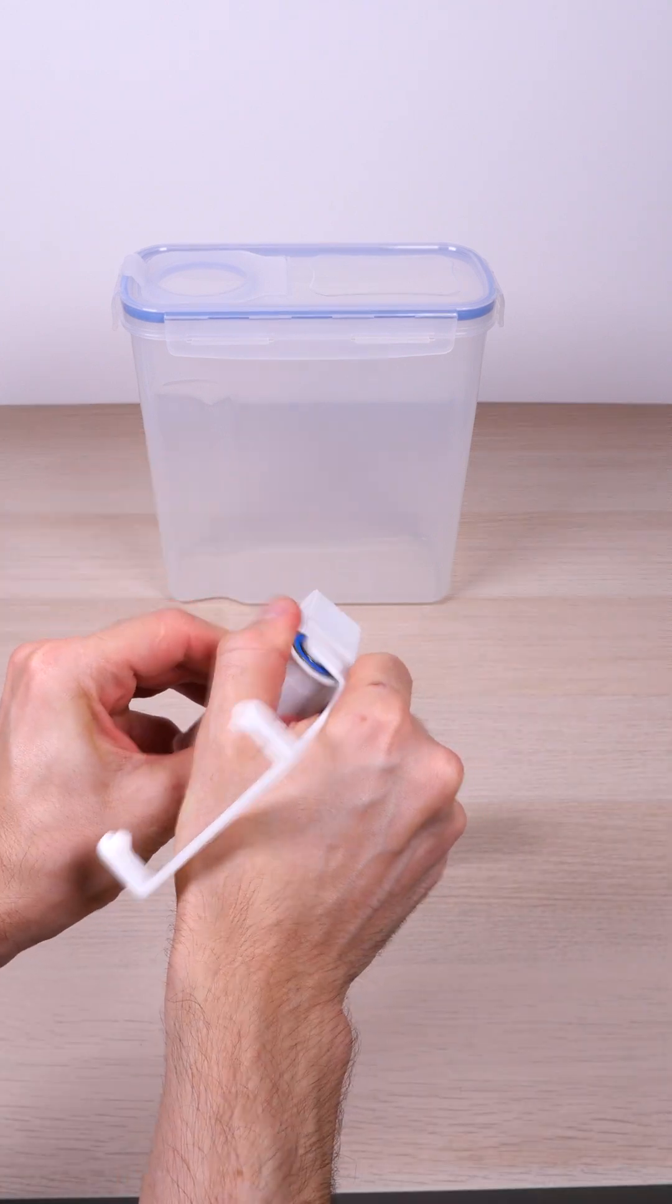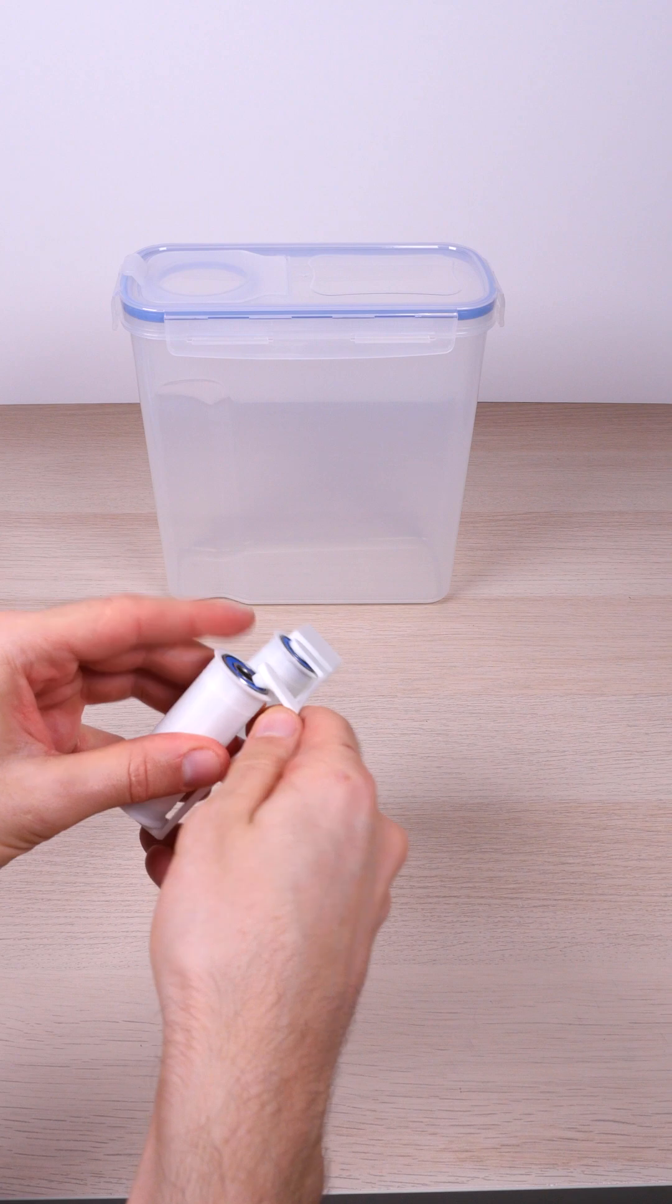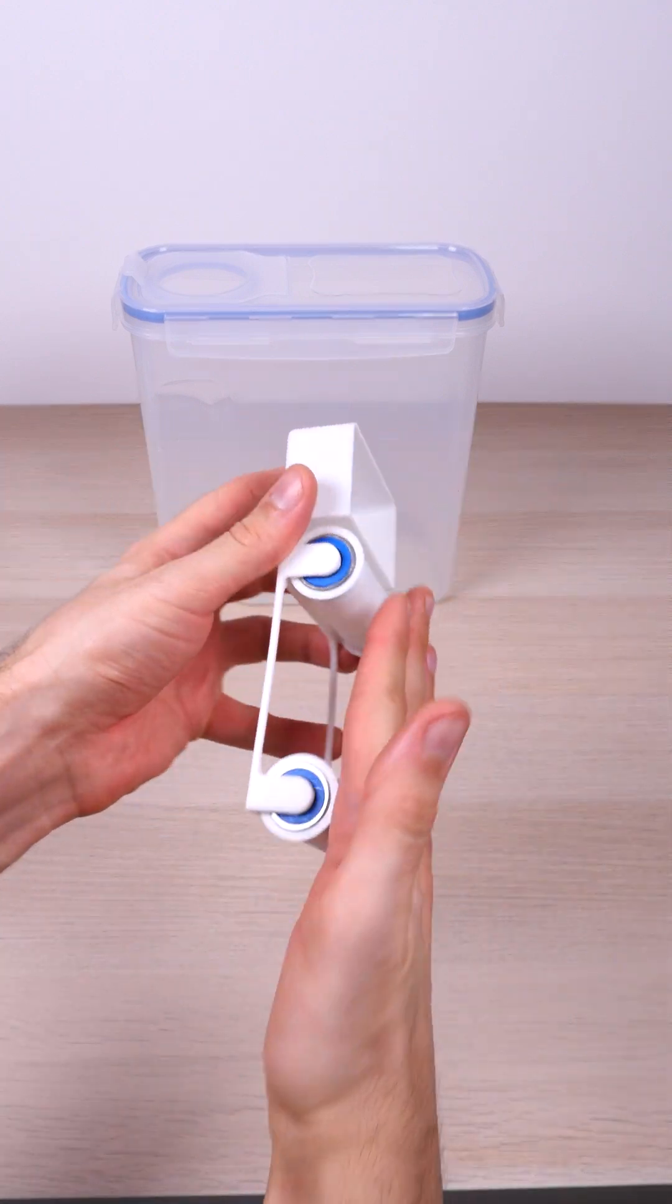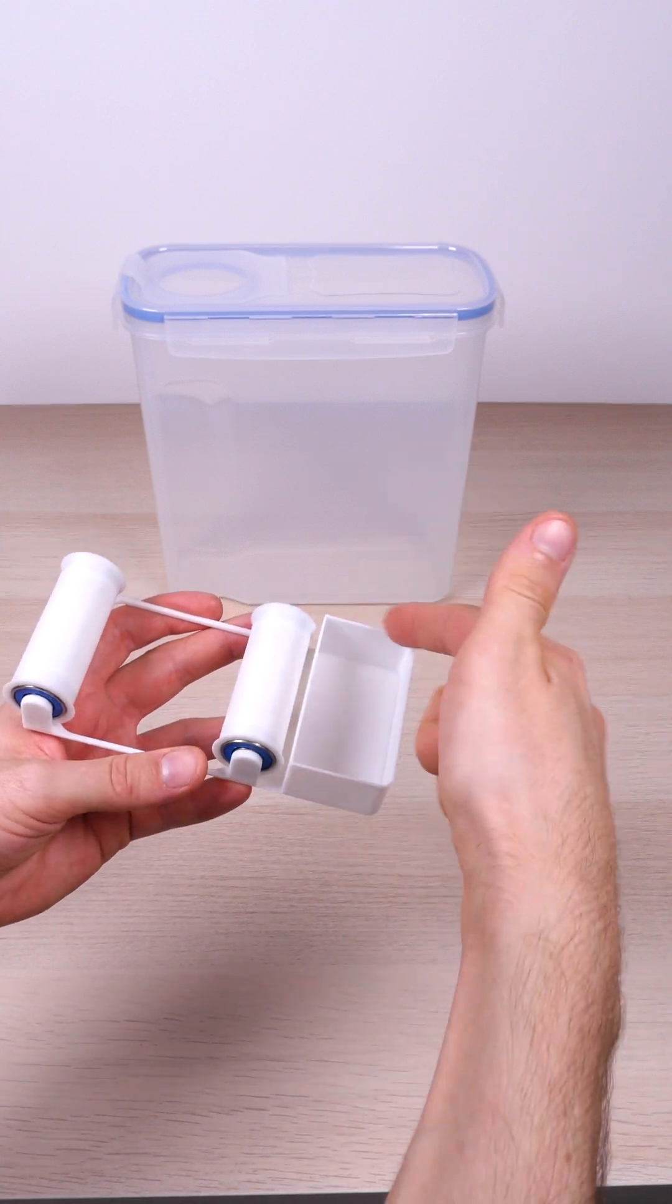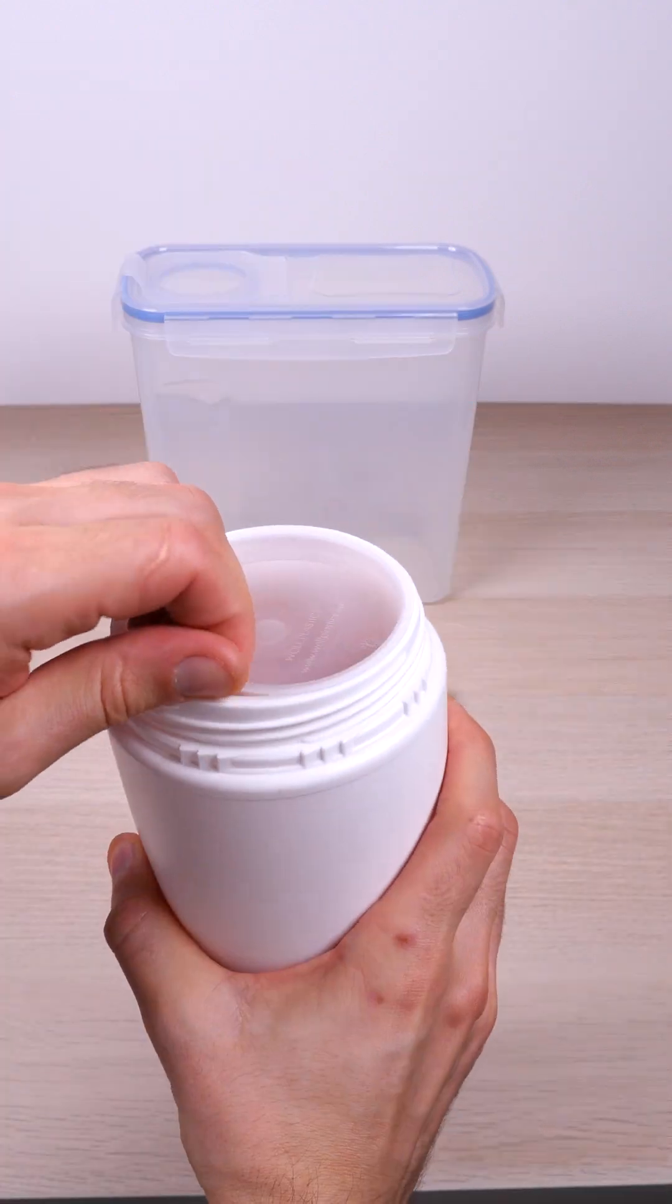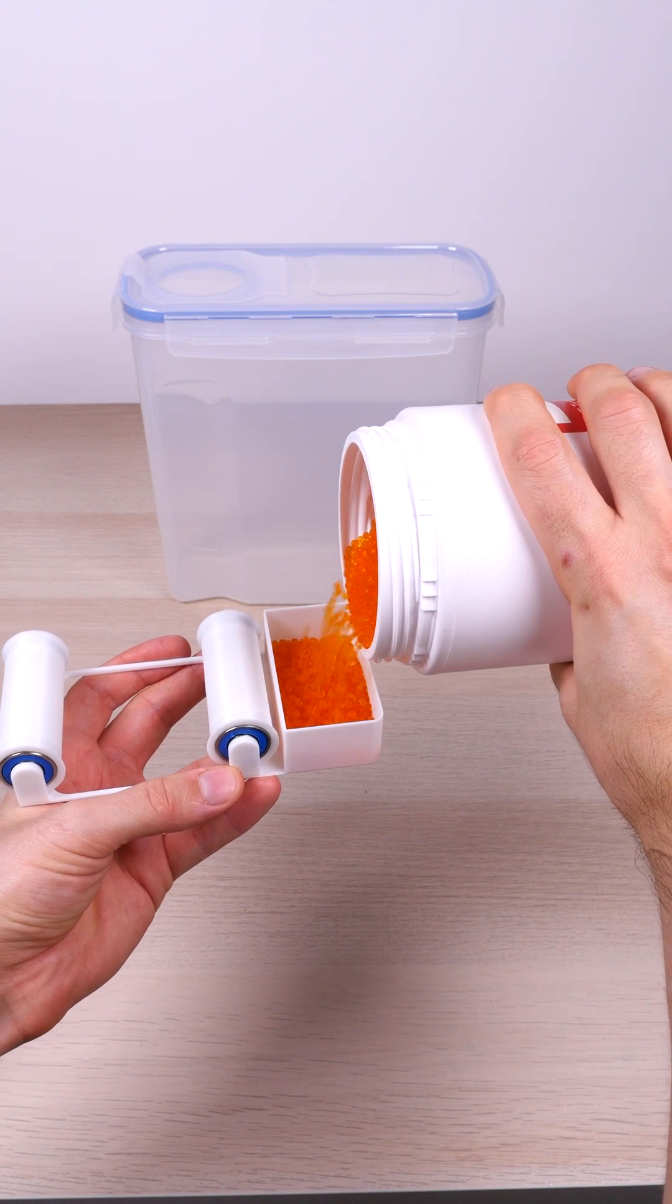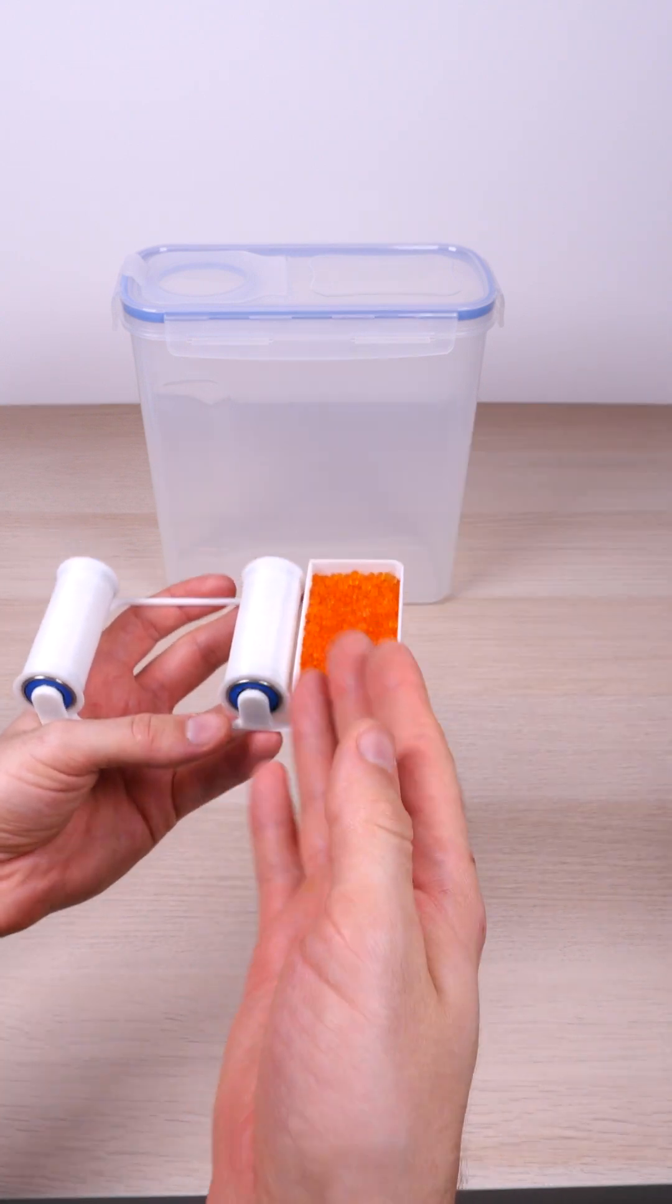Now we take the unit. The second one. And this is the silica container. This is to absorb the moisture.